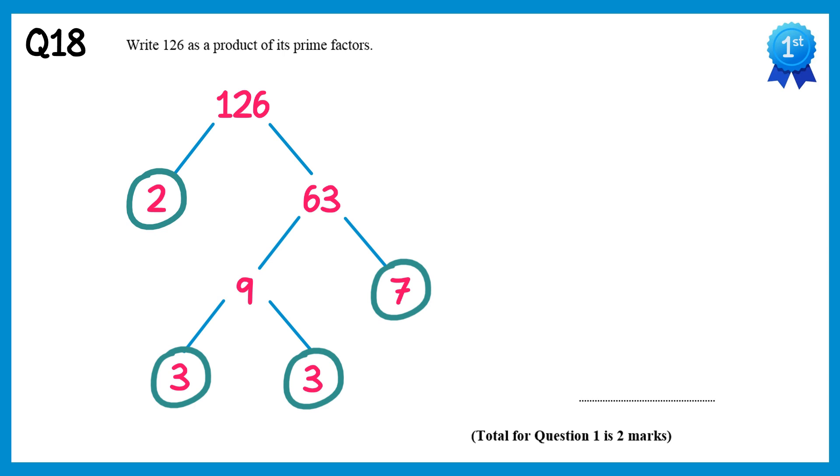So 126 is equal to all of the numbers in circles multiplied together, so 2 times 3 times 3 times 7. And the two 3's in the middle could be grouped together as 3 squared, so the answer is 2 times 3 squared times 7.